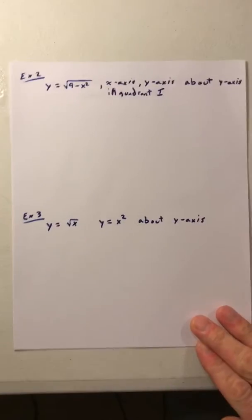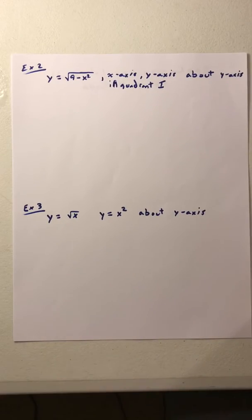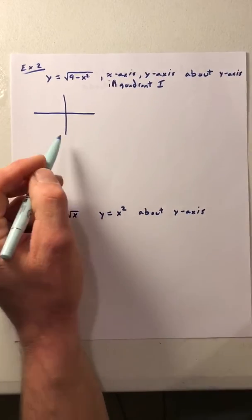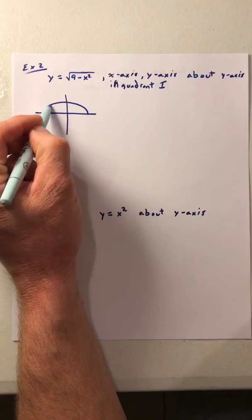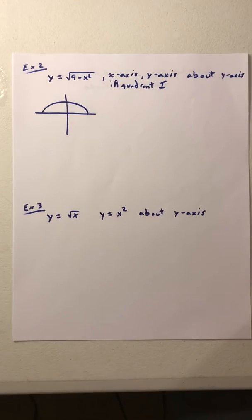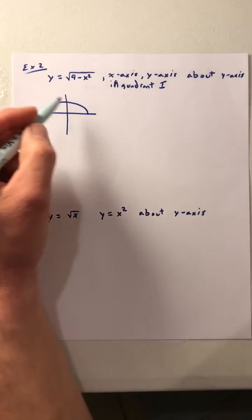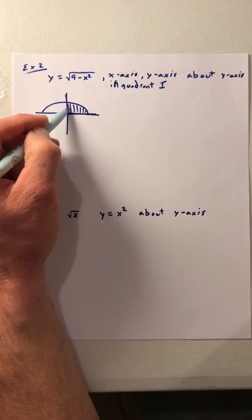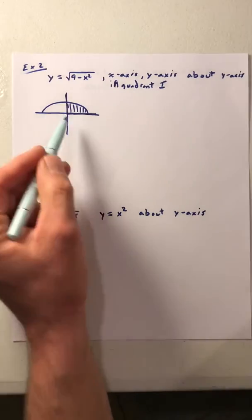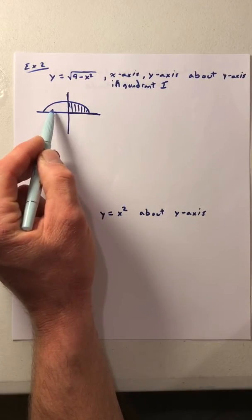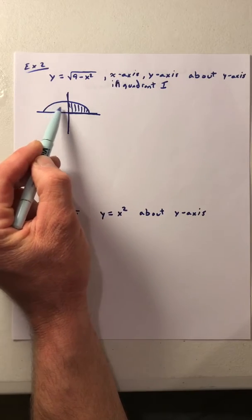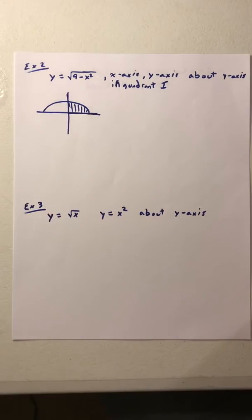In example two, we have the equation y = √(9 − x²). Putting that into the calculator, we see that between the x-axis and y-axis in the first quadrant, we're looking at a quarter-circle figure. As we revolve that around the y-axis, it fills in the other half — that's why they specify quadrant one, because we're looking at just this portion and revolving it fills it in. So we get a hemisphere.